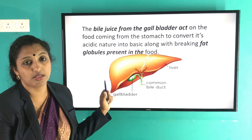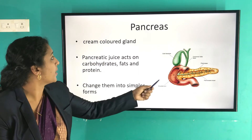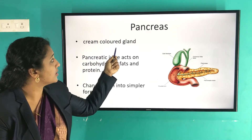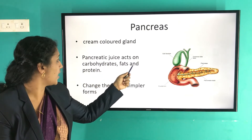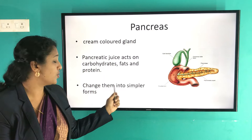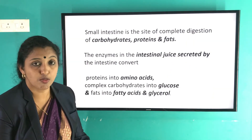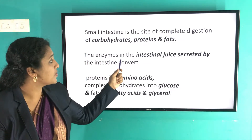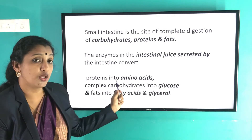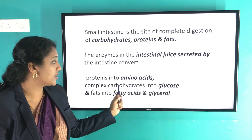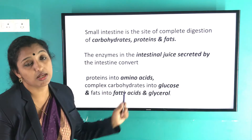The pancreas is another organ that helps in digestion. It is a cream-colored gland, and pancreatic juice acts on carbohydrates, fats, and proteins, converting them into simpler forms. Complete digestion and absorption takes place in the small intestine. Enzymes in the intestinal juice convert proteins into amino acids, complex carbohydrates into glucose, and fats into fatty acids and glycerol.